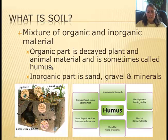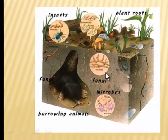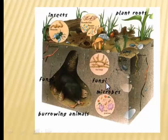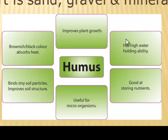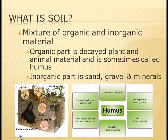They refer to that as humus — not hummus, hummus is what you eat. If you look at this image you can see there are different types of organisms: plants, insect activity, microbes like bacteria, fungi like mushrooms. This chart is a guide for nutrients, how much water it holds, color, and microorganisms — all making up humus, which is found in the top portion of the soil.